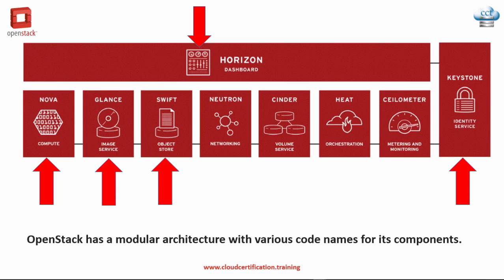Let's move on and talk about Swift, which we briefly touched upon when we talked about Glance. Swift is a scalable, redundant storage system. Objects and files are written to multiple disk drives spread throughout servers in the data center, with the OpenStack software responsible for ensuring data replication and integrity across the cluster. You can pretty much store anything you want on Swift.